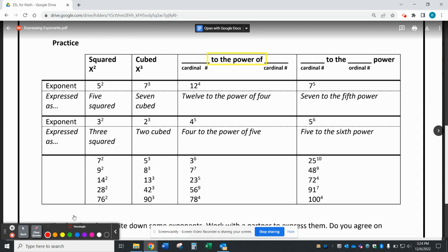Another way to express exponents is to use a cardinal number and say, to the, and then include the ordinal number and power. So here I have 7 with the exponent of 5, and I can express this as 7 to the 5th power.